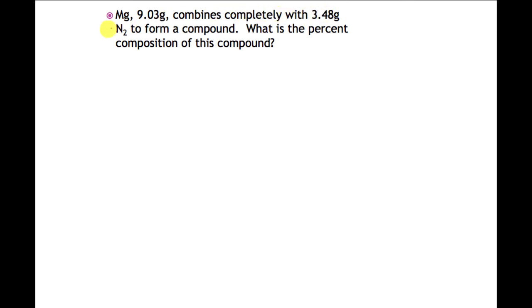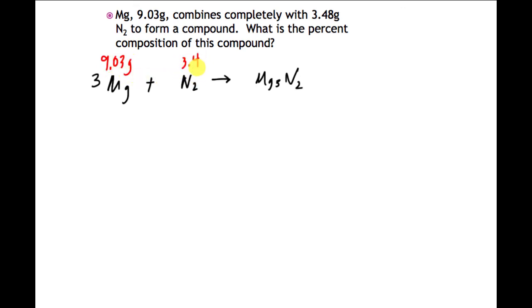Last problem: we have magnesium combining with nitrogen to form magnesium nitride. I'm starting with 9.03 grams of magnesium and 3.48 grams of nitrogen. If these combine completely, the law of conservation of mass tells us the mass on the reactant side must equal the mass on the product side. So the total mass of the compound is 9.03 plus 3.48, which equals 12.51 grams.